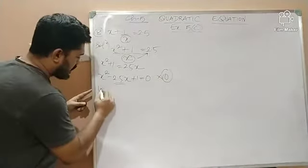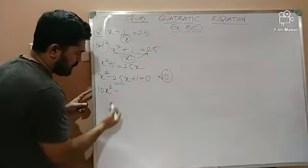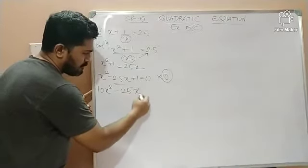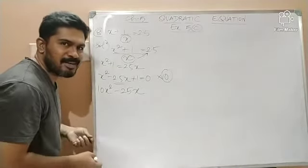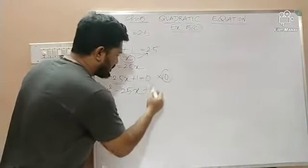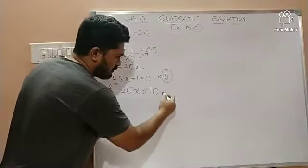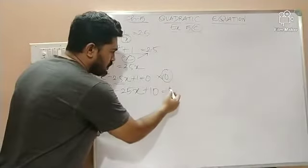So, 10 into x square, 10x square minus 10 into 2.5, 25. So, it becomes 25x. See the magic? The decimal point is removed. Plus 10 into 1, 10, which is equal to 10 into 0, 0.